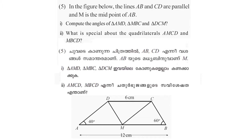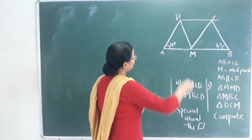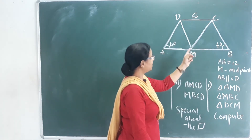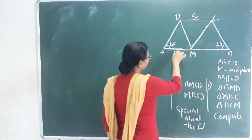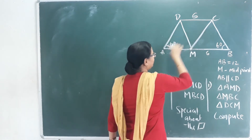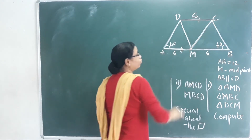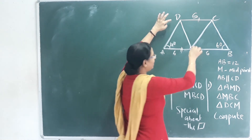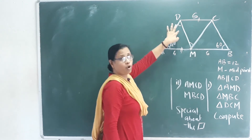In the figure below, lines AB and CD are parallel, and M is the midpoint of AB. Compute the angles of triangles AMD, MBC, and DCM. What is special about quadrilaterals AMCD and MBCD? AB is 12 cm, so AM equals MB equals 6 cm. This line is parallel, meaning these two sides are equal and parallel. This is a transversal axis.